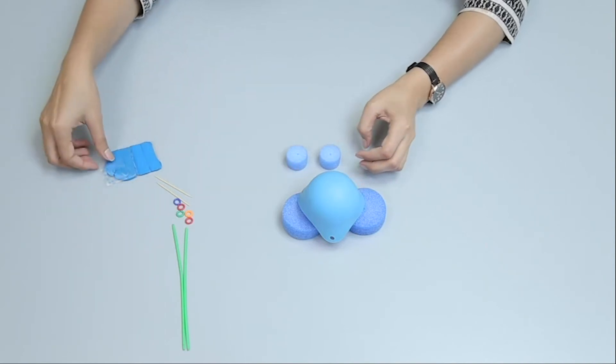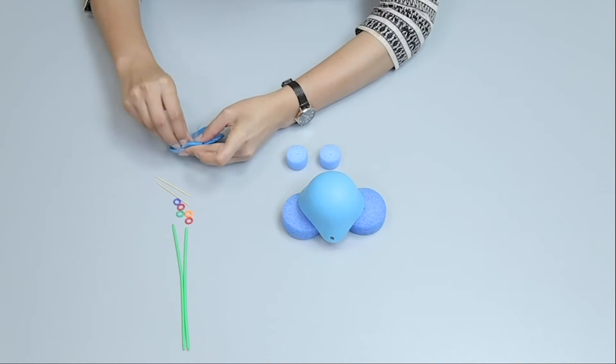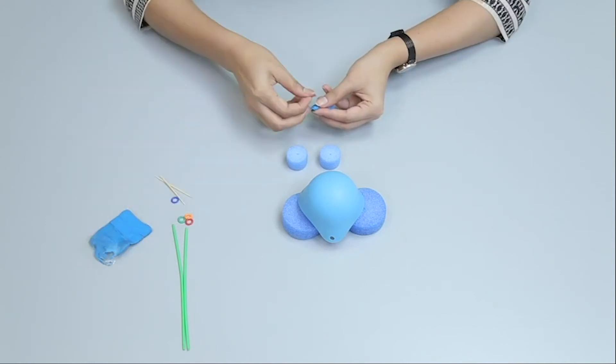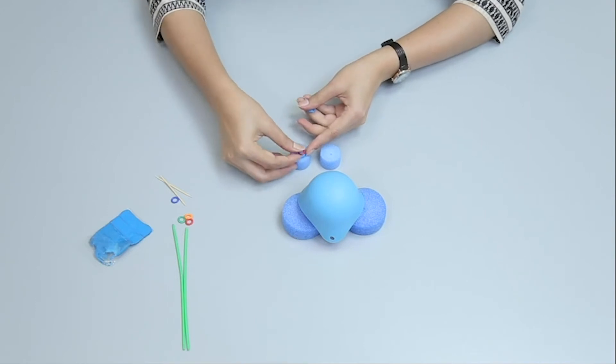To make the eyes of the monster, stick plastic links with sticky tags. Place two foam circles on each foam circle, small ones.